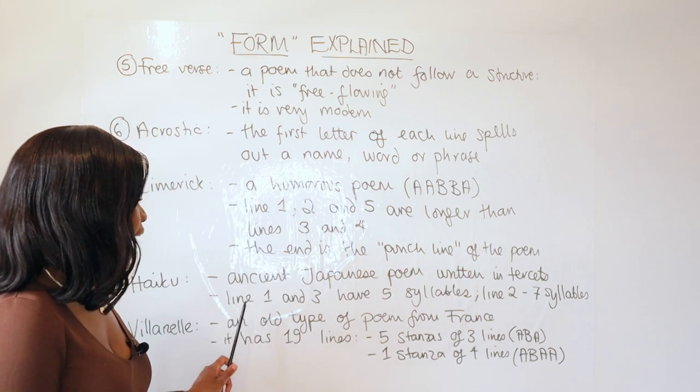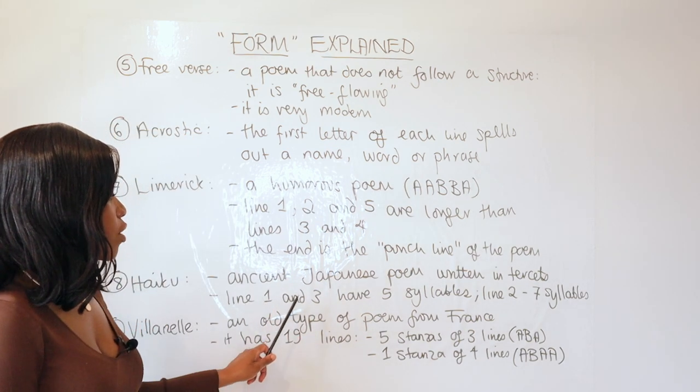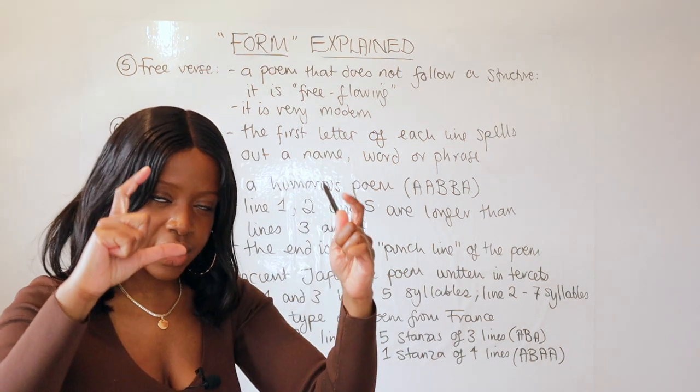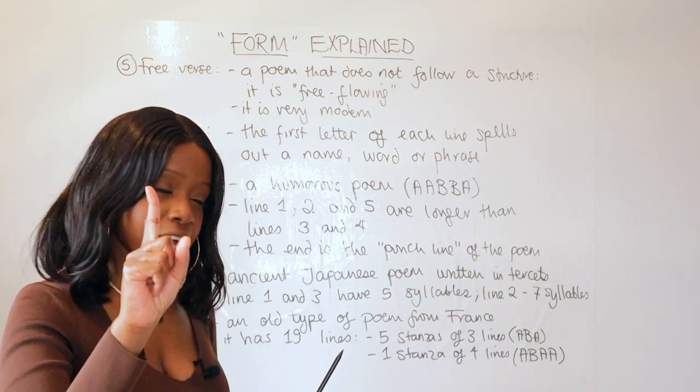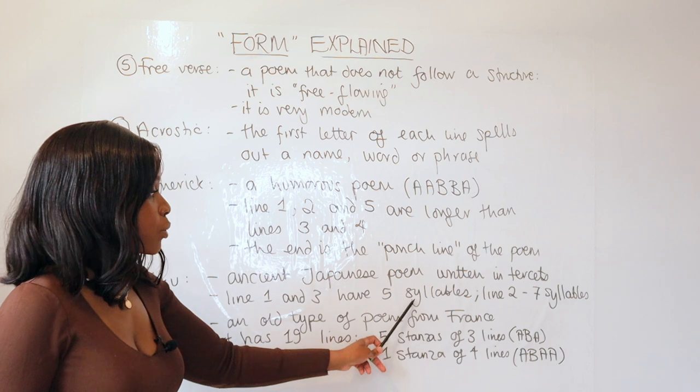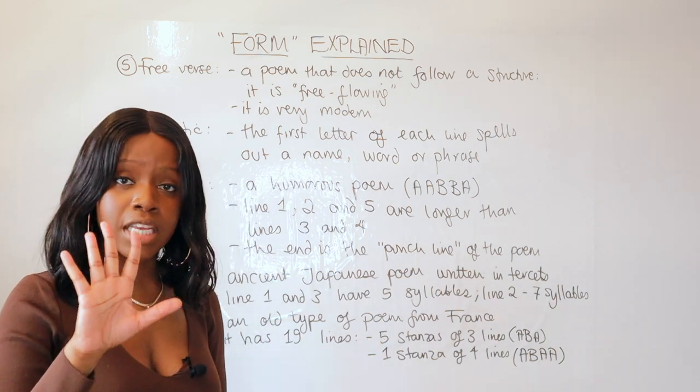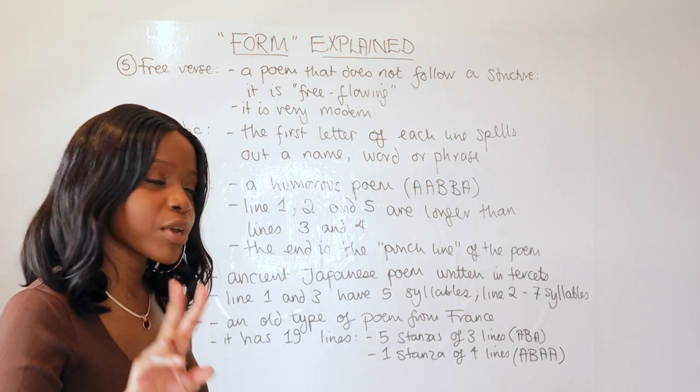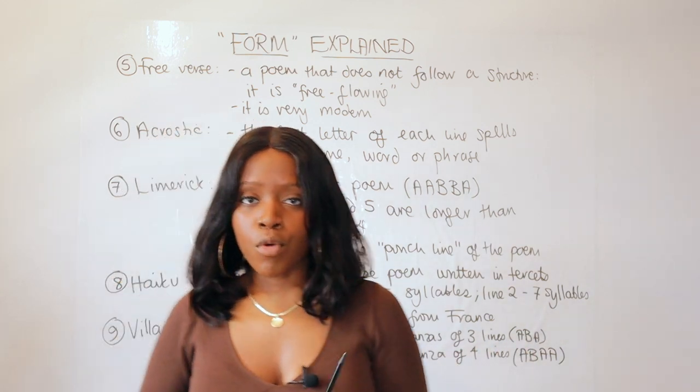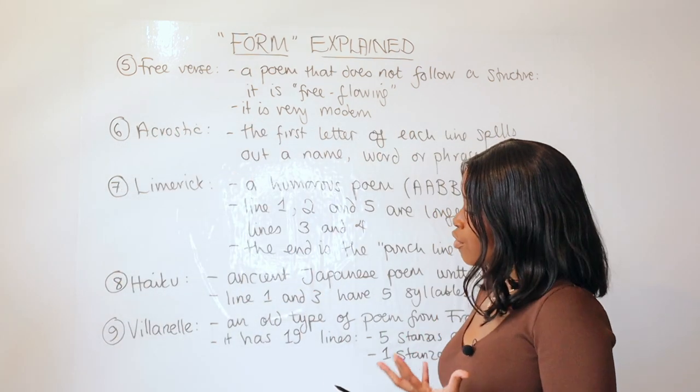Lines one and three have five syllables. So within each terset, within each three-line poem, the first and the third line of poetry has—you'd be able to count out—five syllables. However, the second line, the middle line, must have seven syllables.